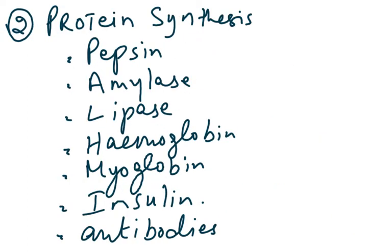The second use of energy is protein synthesis. Examples of proteins include enzymes such as pepsin (produced in the stomach wall), amylase (produced by the pancreas and salivary glands), and lipase (produced by the pancreas). Other examples are hemoglobin (formed in bone marrow), myoglobin (found in muscles), insulin (produced by beta cells of the pancreas), and antibodies (produced by lymphocytes).